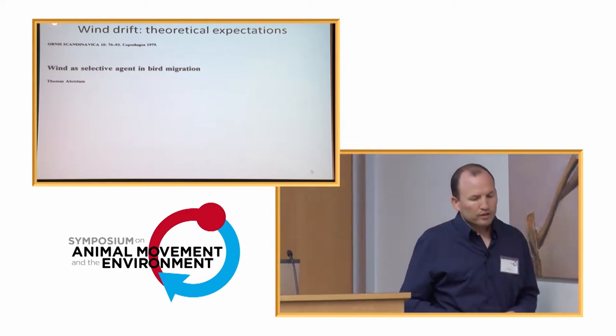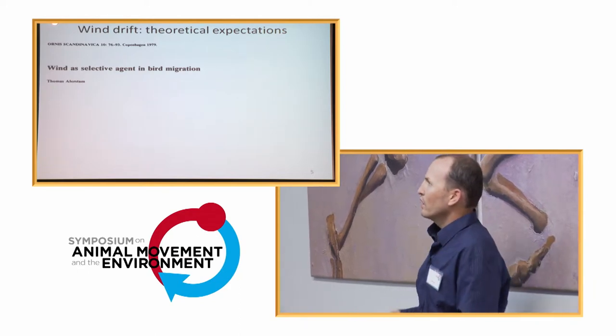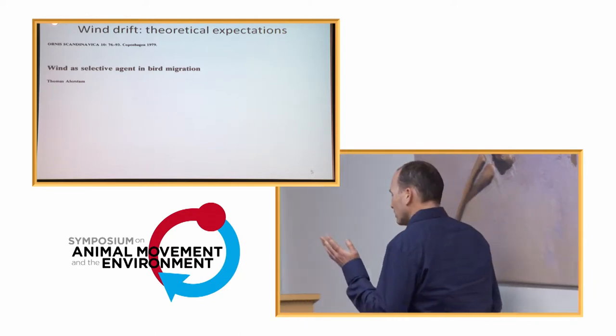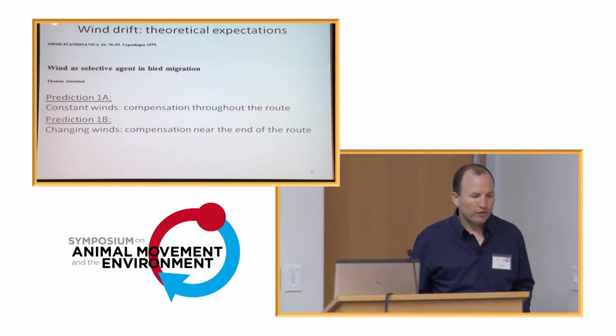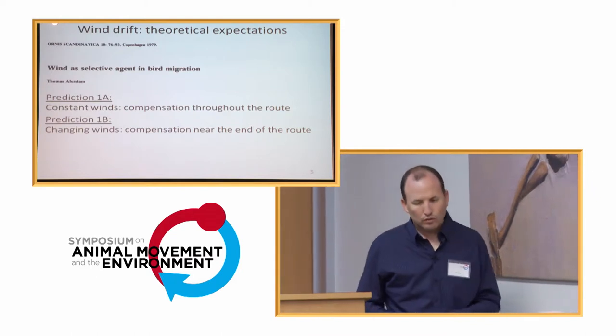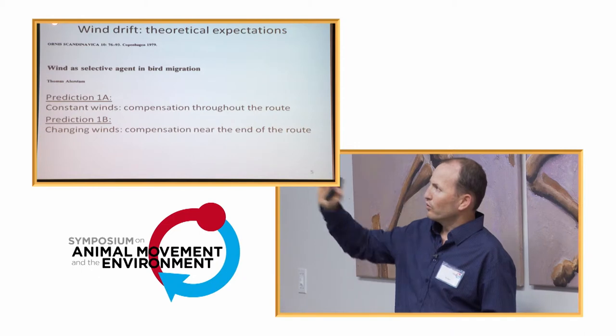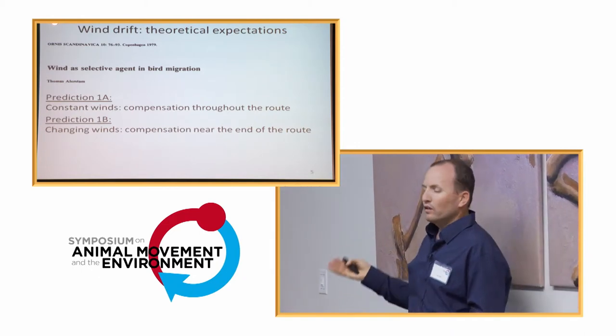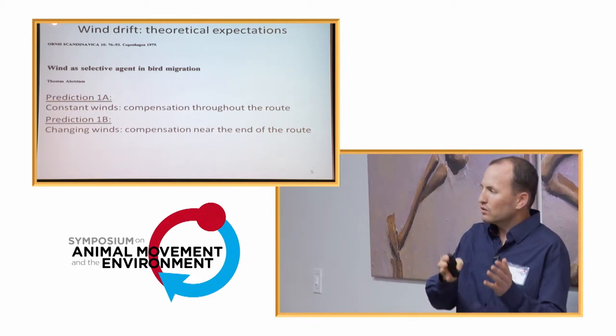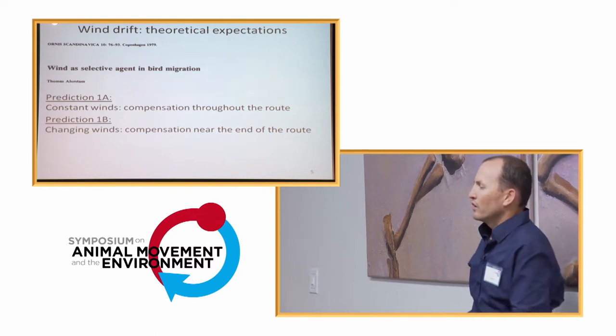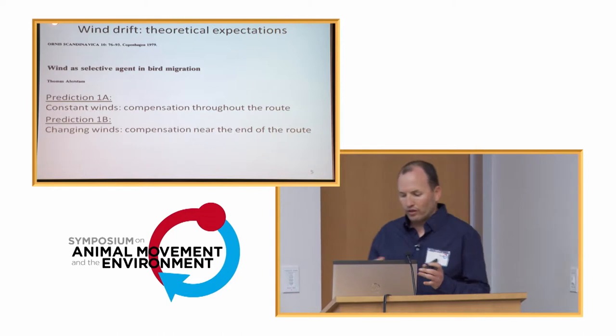So, another important issue is the wind, the type of the wind and the distribution of the winds along the track. So, in this particular paper, it was suggested that bats may do two different things, depending on the wind. When the winds are constant, they should compensate all the way along the route. And when the winds are changing from side to side, then only when they are getting close to their destination, they should correct their overall direction and go straight to their feeding site or their roost.